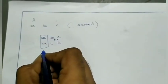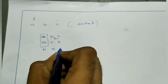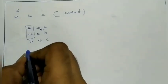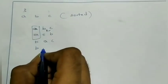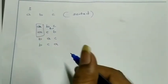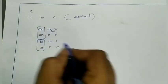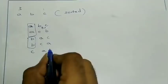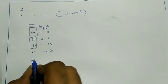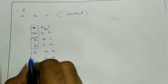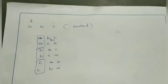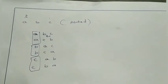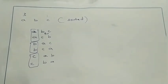Then we will take b a c, then b c a — these are the combinations starting from b. Then c a b, then c b a — these are the combinations starting with c. So like that we have to find all these permutations in this order.